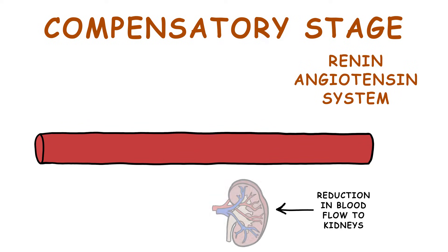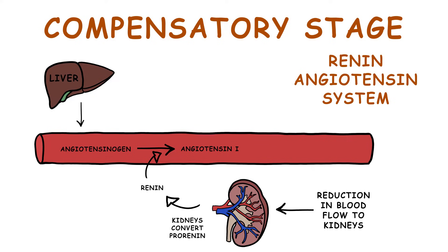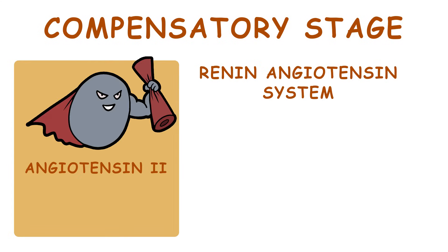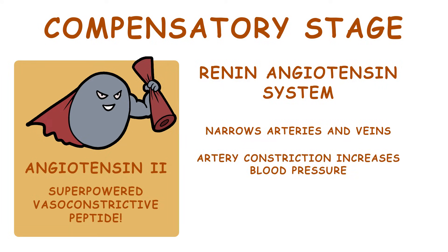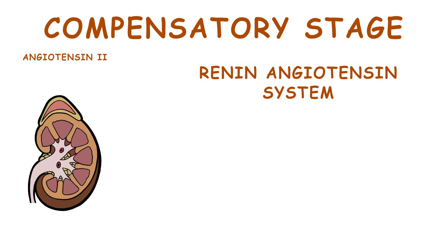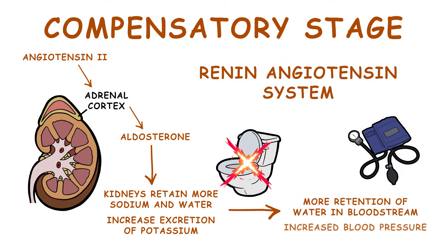A reduction in blood flow to the kidneys triggers them to convert pro-renin, found in blood, to renin. Renin is released into circulation, where it converts angiotensinogen, released by the liver, to angiotensin 1. With the help of angiotensin-converting enzyme, angiotensin 1 gets converted to angiotensin 2. Angiotensin 2 is a superpowered vasoconstrictive peptide which narrows both arteries and veins. Artery constriction increases blood pressure, while vein constriction allows more blood to return to the heart. Angiotensin 2 also triggers the release of aldosterone from the adrenal cortex. Aldosterone makes the kidneys retain more sodium and water and increase excretion of potassium, meaning more retention of water in the bloodstream and increased blood pressure.